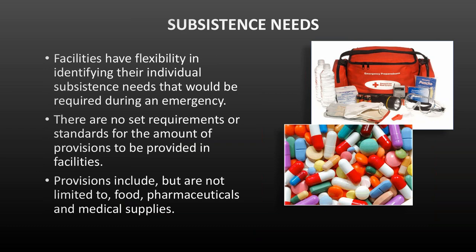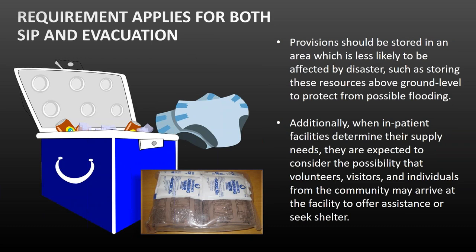Next we have subsistence needs. CMS has not said specifically you must have three days of food and water — they've given you some leeway because you'll need to refer back to your hazard vulnerability assessment. It's pretty standard to say you'll have three days of food and water. But what if you're somewhere super remote and you've identified that if there's an area-wide disaster, it might take emergency responders a couple extra days to get to you? Analyzing your risks and saying, 'Maybe we need five days of food and water,' can really make all the difference.